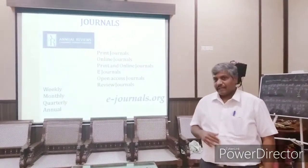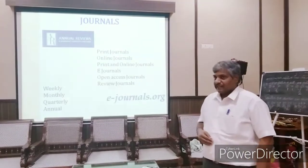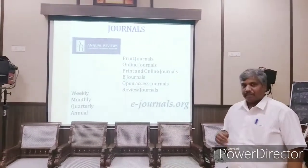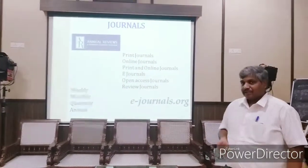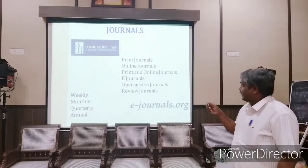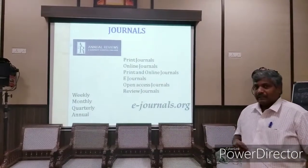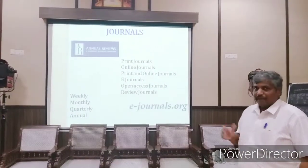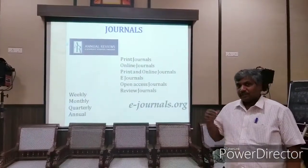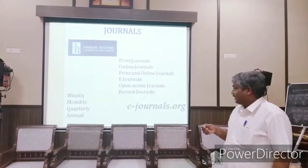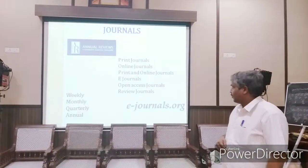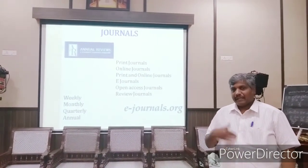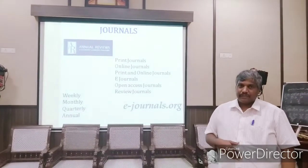There are different kinds of journals. In terms of timeframe, journals are published weekly, monthly, or quarterly, and some journals are annual. When we talk about types of journals, they may be print journals, online journals, a combined print-and-online journal, or exclusively e-journals. There are also journals coined as open access journals, which give access to everybody — anyone can download and read anything without cost.